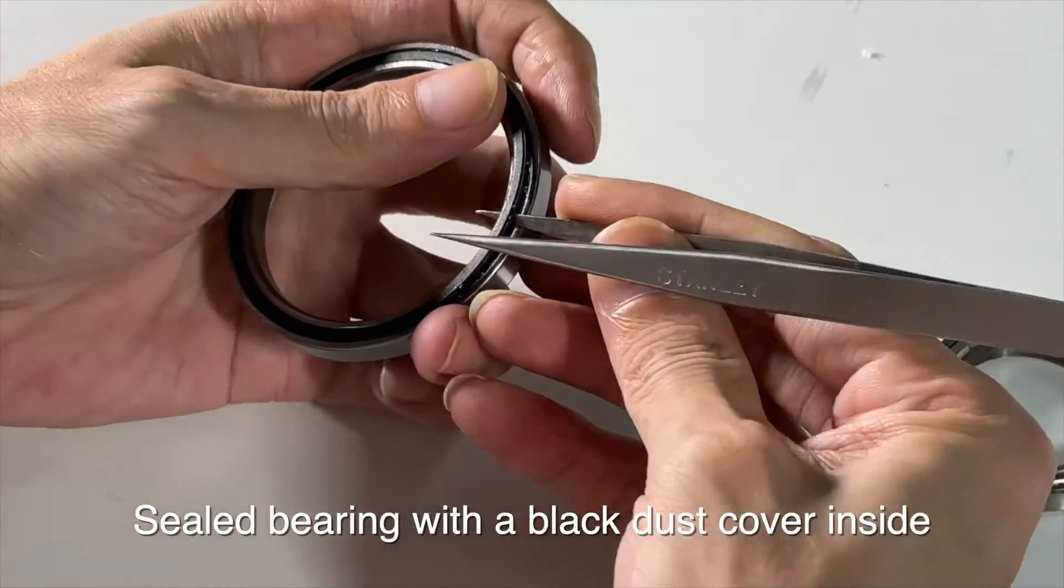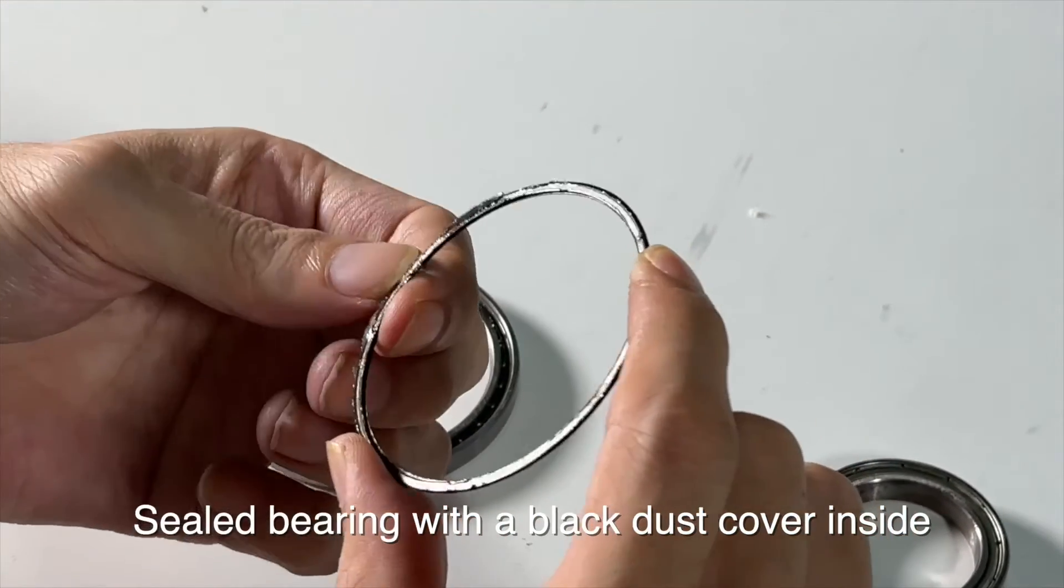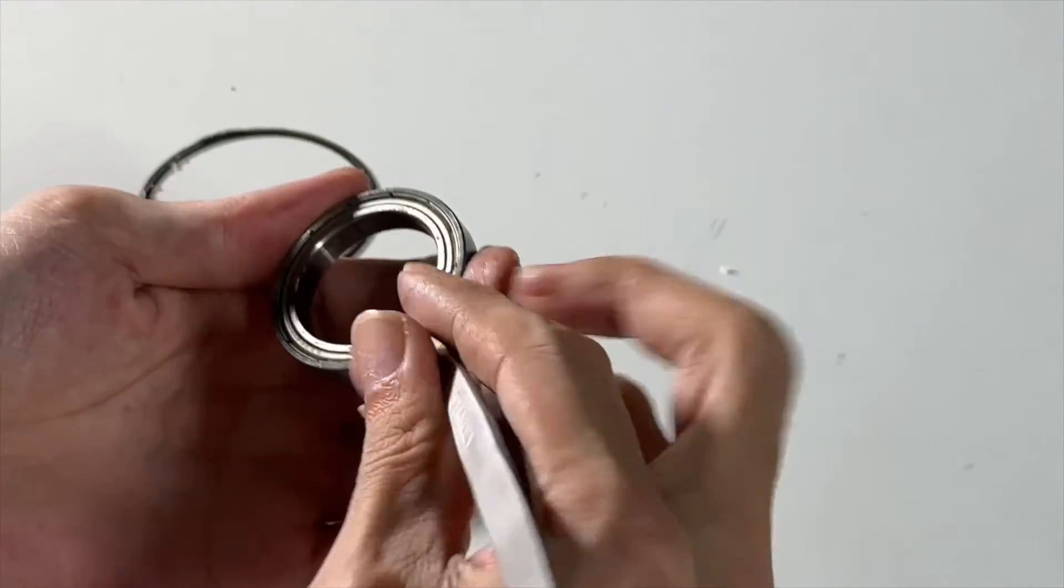Now I will take out this dust cover. This is the dust cover. The bearing on the right side doesn't have the dust cover.